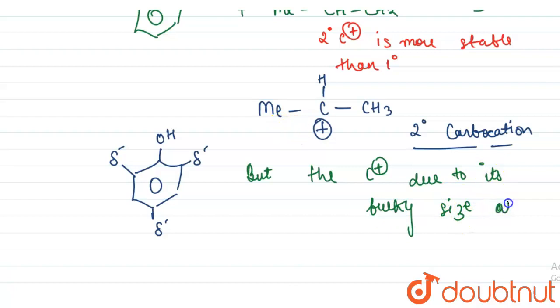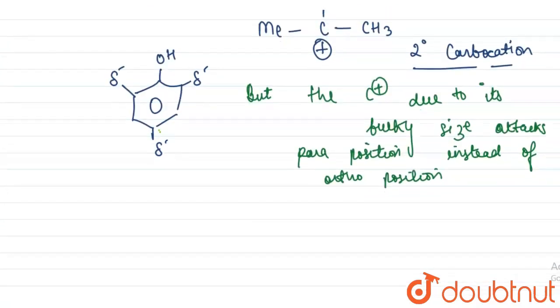The carbocation attacks para position instead of ortho position. So this carbocation will attack the para position, which is this position. It will also have repulsion from OH group because it is a large group, so there is no ortho compound formation.